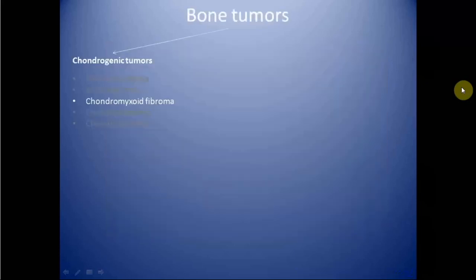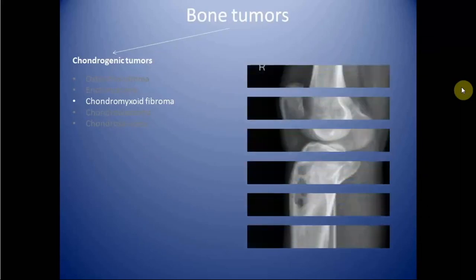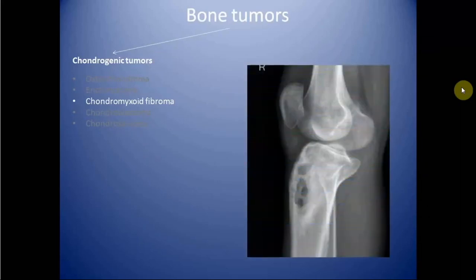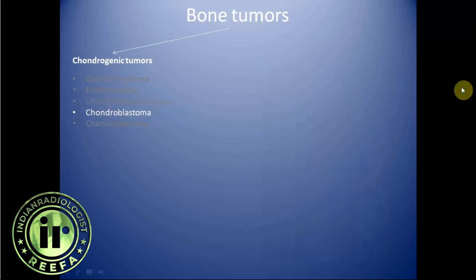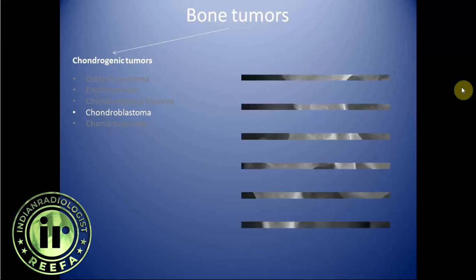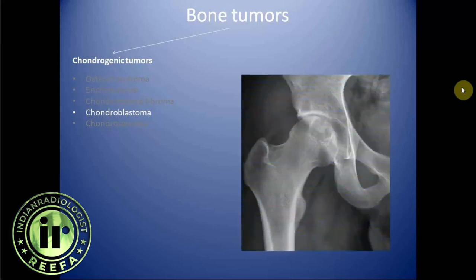In Ollier disease, it is associated with the presence of hemangiomas, and this situation is known as Maffucci syndrome. Next in the series is chondromyxoid fibroma, which is a rare benign chondrogenic tumor. It is most commonly seen in the tibial metaphysis. It is eccentric and expansile in nature. It is seen in young adults and children, and differential diagnosis includes aneurysmal bone cyst, non-ossifying fibroma, and fibrous dysplasia.